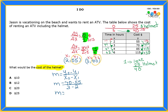So Y₂ minus Y₁ is 70 minus 55, over X₂ minus X₁ which is 3 minus 2. So what's 70 minus 55? It's 15. And 3 minus 2 is 1. Notice that when we did the change of Y over the change of X — the rate of change — it's exactly the same. I got 15 over 1.